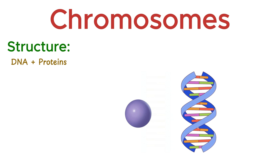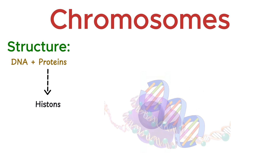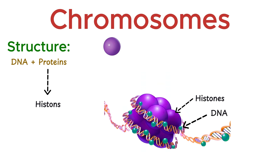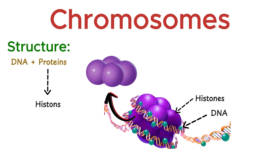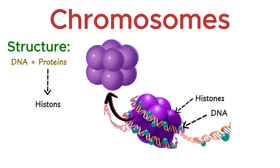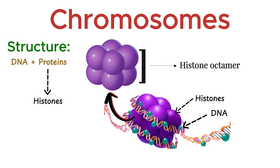Then comes the protein part. These are special proteins called histones. DNA wraps around these histones. Histones are typically arranged in groups of eight, forming a structure called a histone octamer. This octamer serves as the core around which DNA is wrapped to form a nucleosome, the basic unit of chromatin.